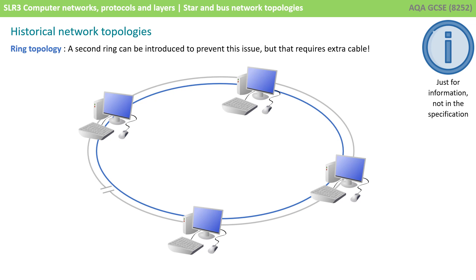There have been a number of attempts over the years to try and resolve this problem. One solution with a ring network was just to introduce a double ring, but of course this introduces a lot more cabling and additional technology, and better solutions were on the horizon.